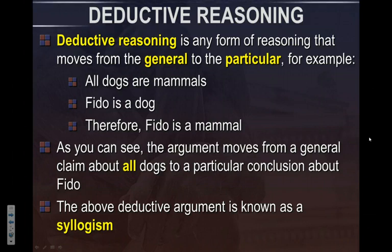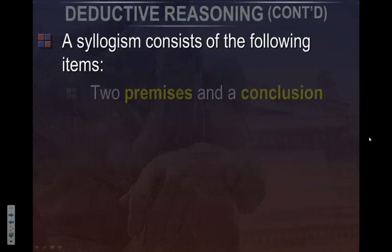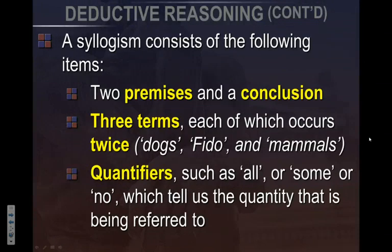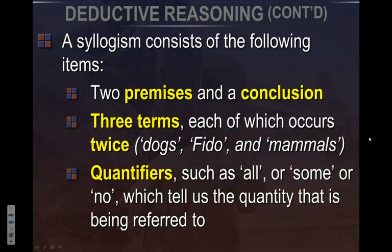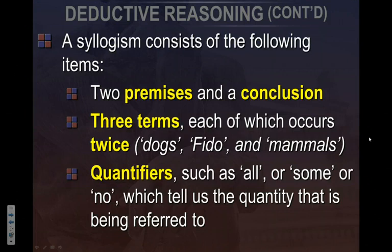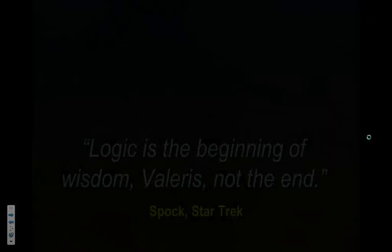This is known as a syllogism — a deductive argument. The formal term for it is a syllogism. Generally, the structure of a syllogism is two premises and a conclusion. There are three terms that usually appear within those, each occurring twice — for example, the word 'dogs' appeared twice, and 'mammals.' We also have quantifiers like all, some, no, one — things like that. That's generally how a proper syllogism is structured.